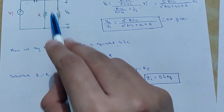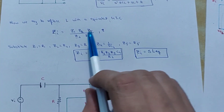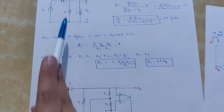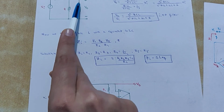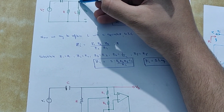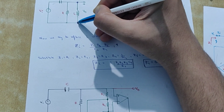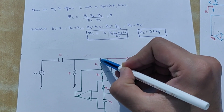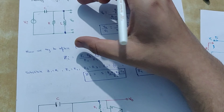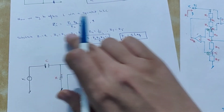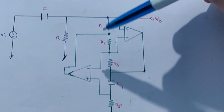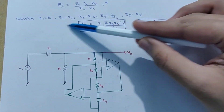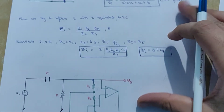Now what we will do is simply replace L with a GIC in which the impedance values are Z1=R1, Z2=R2, Z3=R3, Z4=1/(SC4), and Z5=R5. A GIC is placed between these two points — one point is the node and the other is ground. The GIC is substituted instead of the inductor with these values, and we have obtained a high pass filter using GIC.